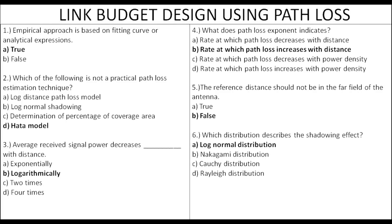The shadowing effect — this is the log distance path loss model, and the shadowing effect is captured by log normal shadowing. The mean value is 4.58 dB for that shadowing parameter.